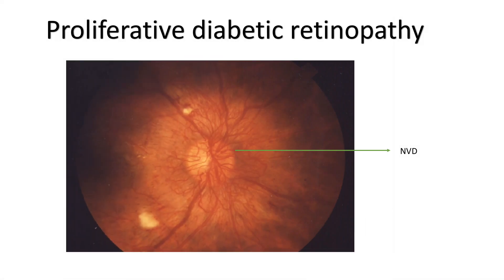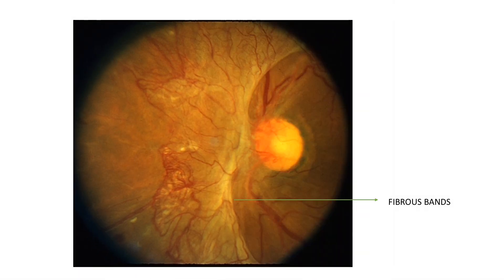Proliferative diabetic retinopathy, or PDR, is a stage when new vessels start forming on the optic disc and all over the retina. This is called NVD because it is neovascularization of the disc. Fibrous bands form all along these blood vessels — they are called fibro-proliferative sheets.